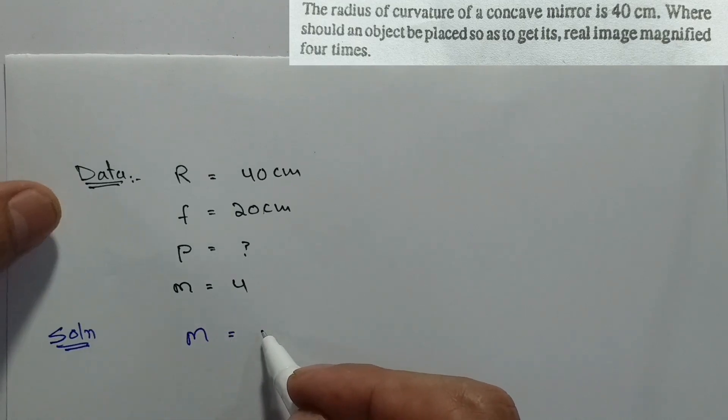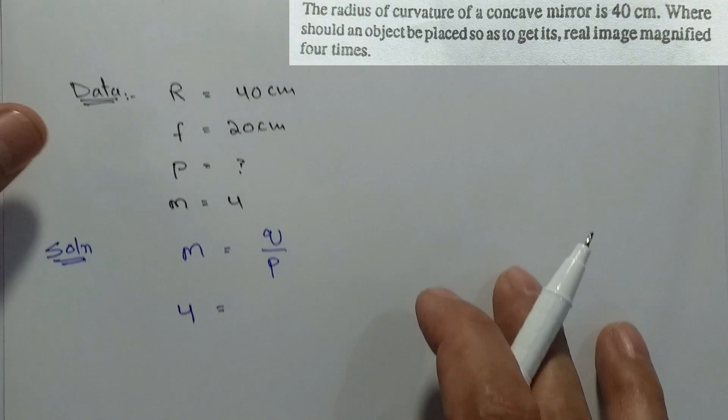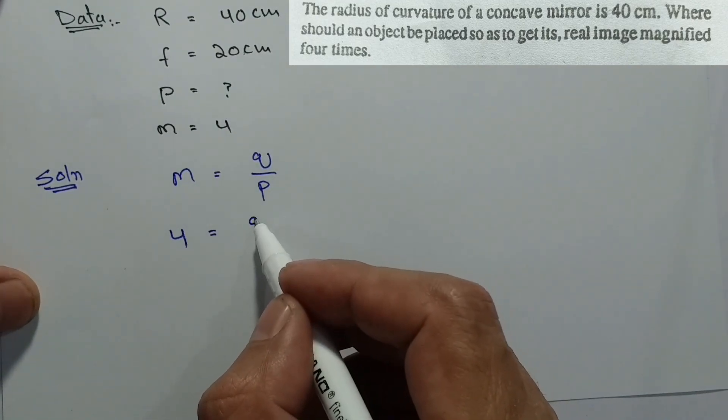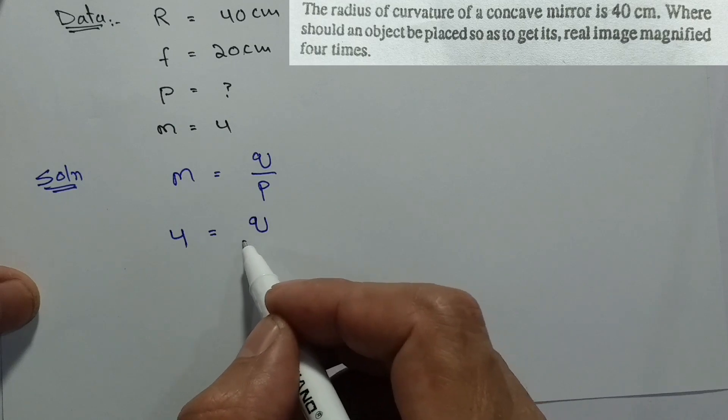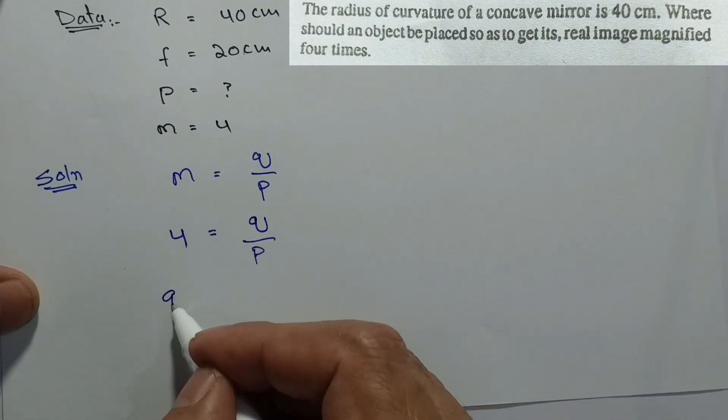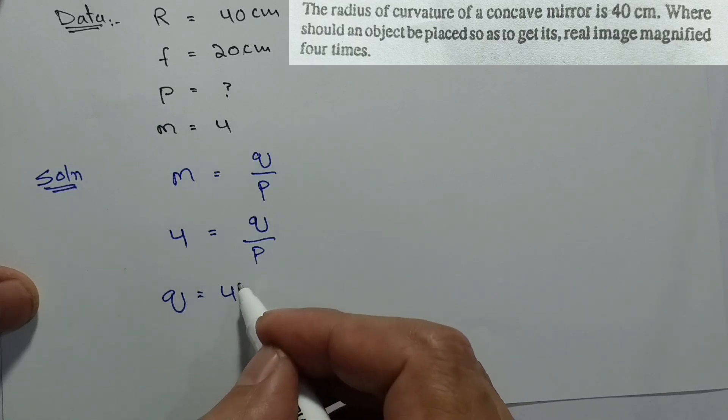We will use the magnification formula m equals q upon p. Magnification is 4, so 4 equals q upon p. Therefore q equals 4p.